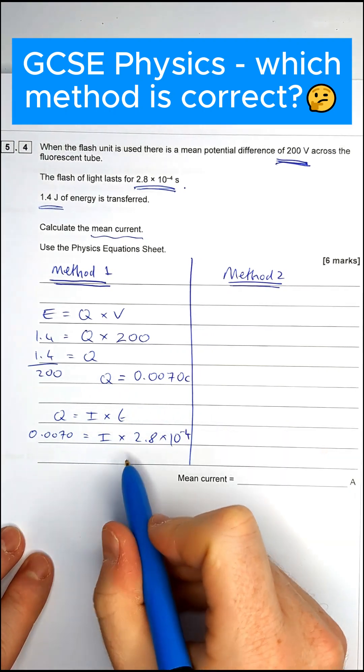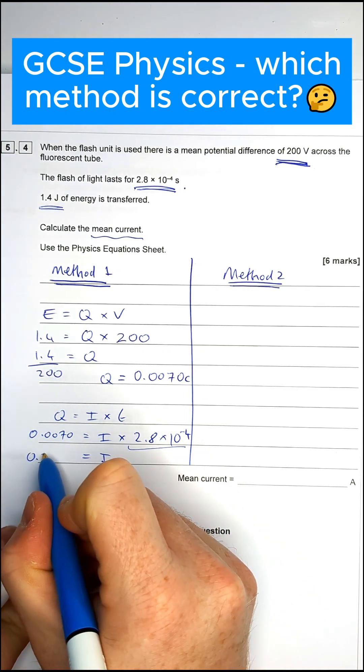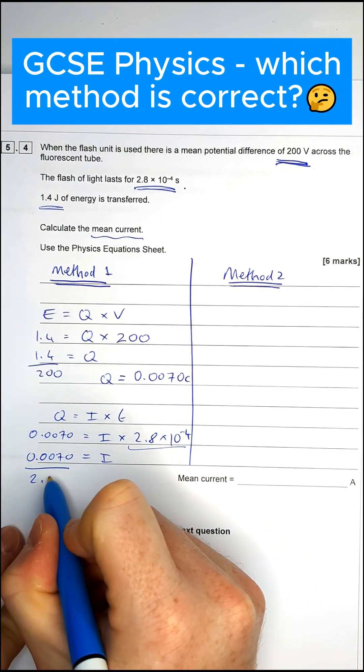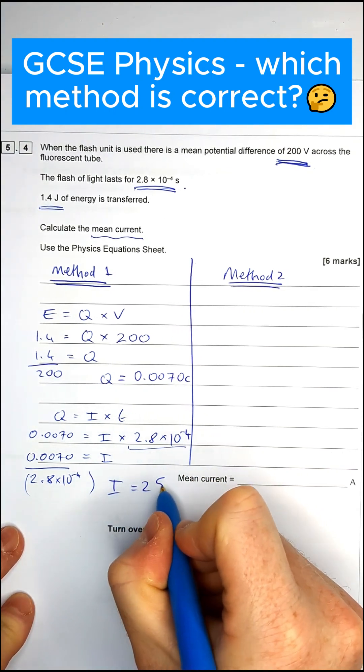And then to get rid of this side of the equation, I can find current by dividing both sides by 2.8 times 10 to the power minus 4. And if you do that, you'll get a current of 25 amps.